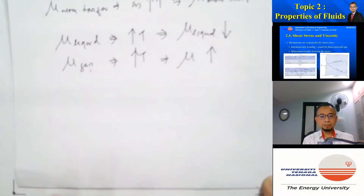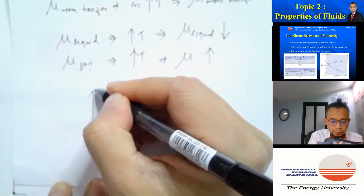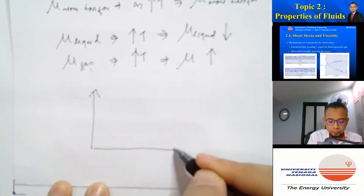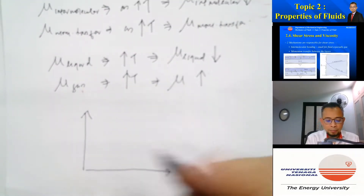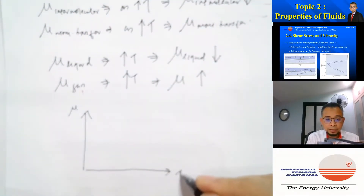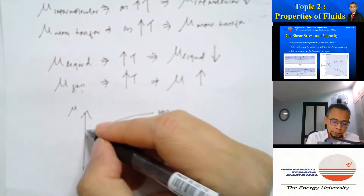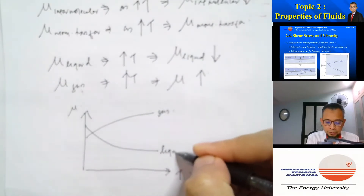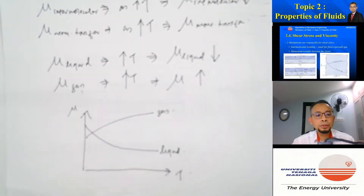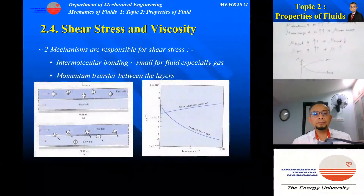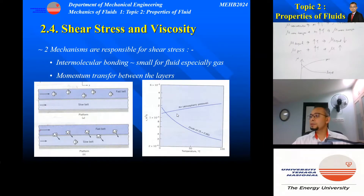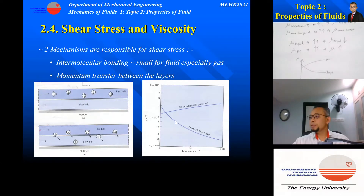So if we plot the graph of viscosity against temperature: for gas, viscosity increases with temperature, and for liquid it reduces with temperature. For air, for example, viscosity increases with temperature, whereas for crude oil, which is a liquid, viscosity reduces with temperature.